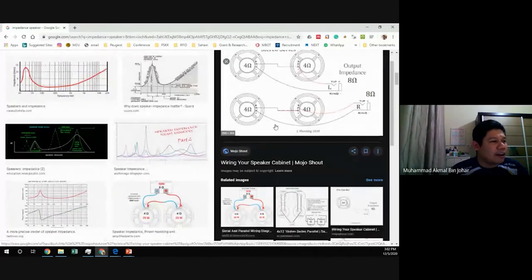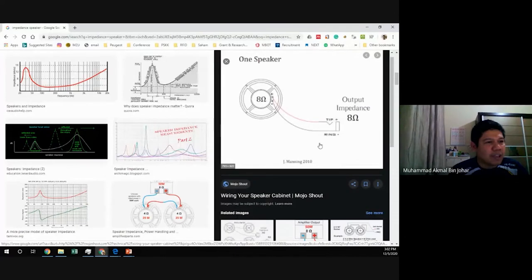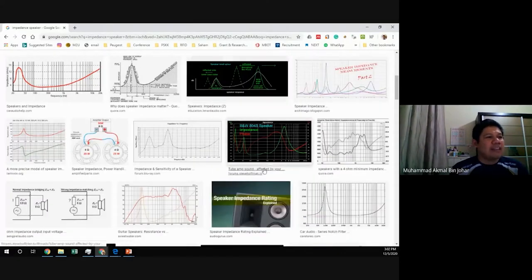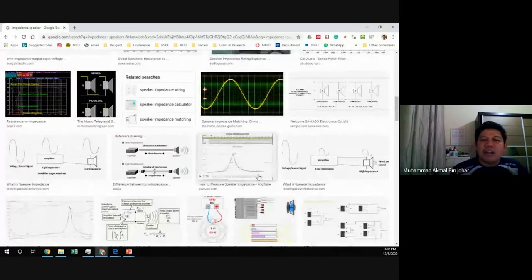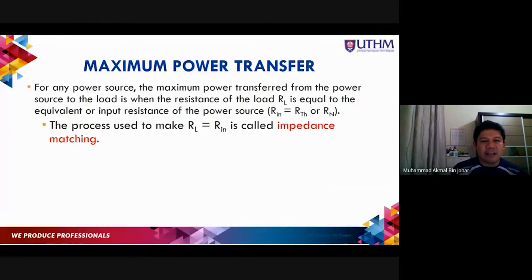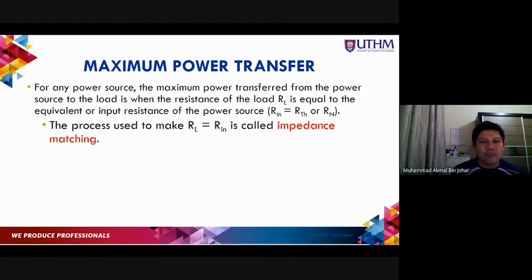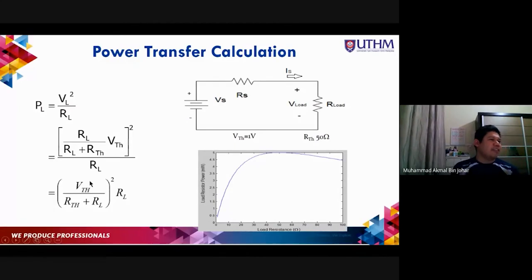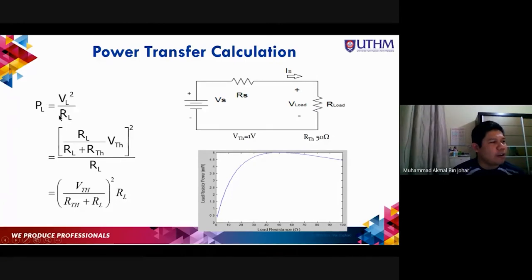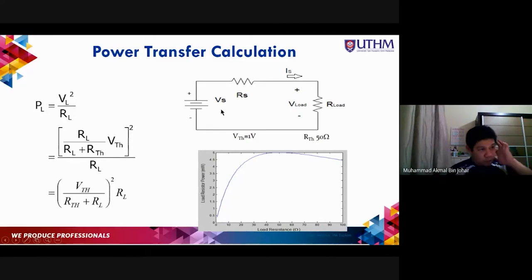If you have 8-ohm speakers and 8-ohm output impedance, you get maximum power transfer. We can prove this mathematically: power absorbed by the load is P_L = (V_Th / (R_Th + R_L))² × R_L. Using this formula, we plot load resistance from zero up to the Thevenin resistance value, say 50 ohms.